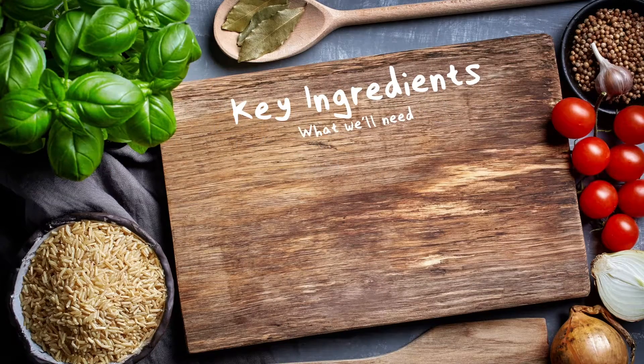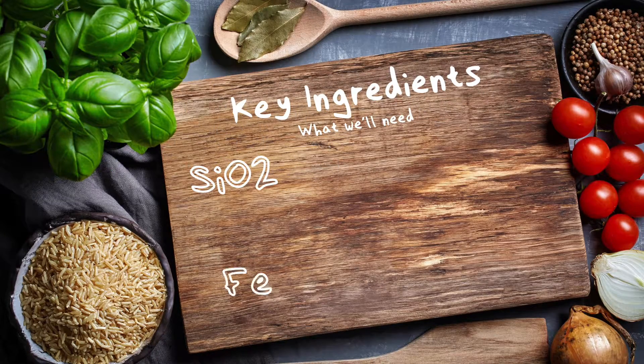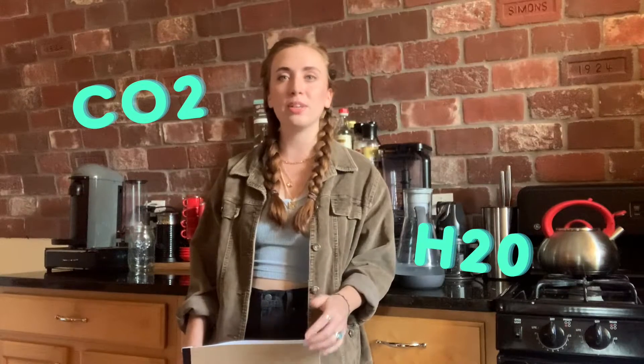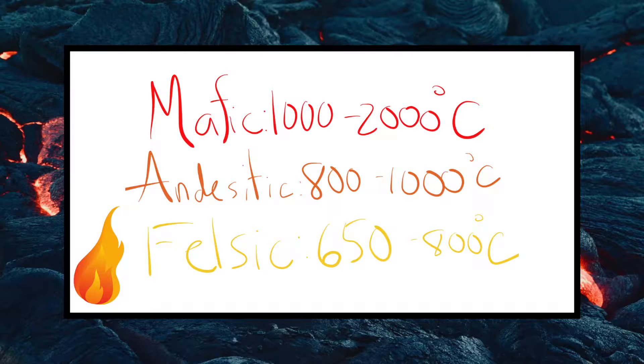All magma is made up of the same ingredients, just in different concentrations. These ingredients are silicon dioxide, iron, magnesium, calcium, sodium, and potassium. Magma also has varying amounts of gases — the main ones being carbon dioxide and water. There can also be smaller concentrations of different gases like sulfur, fluorine, and chlorine. Not only do mineral composition and gas concentration separate magma types, but so does temperature — certain magmas have much higher temperatures than others.